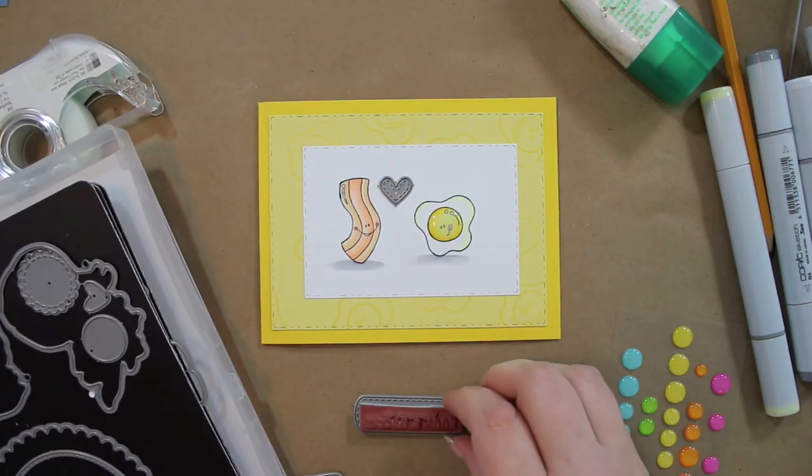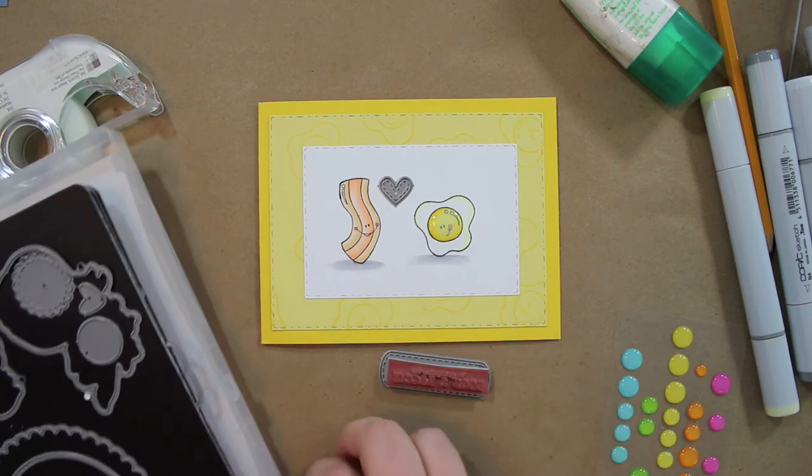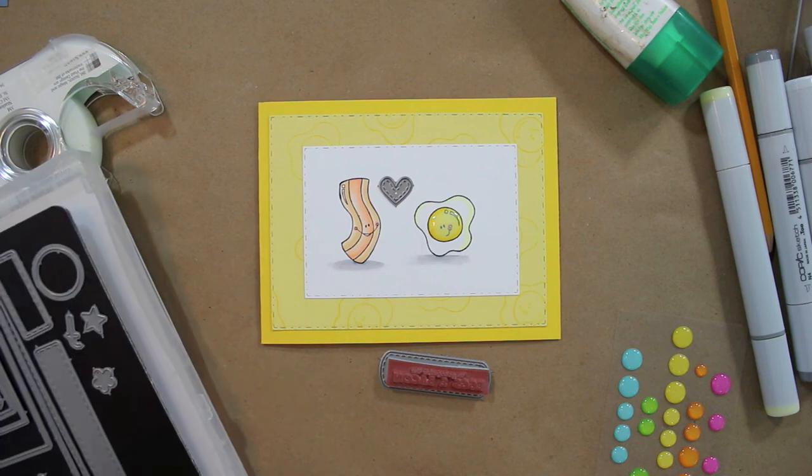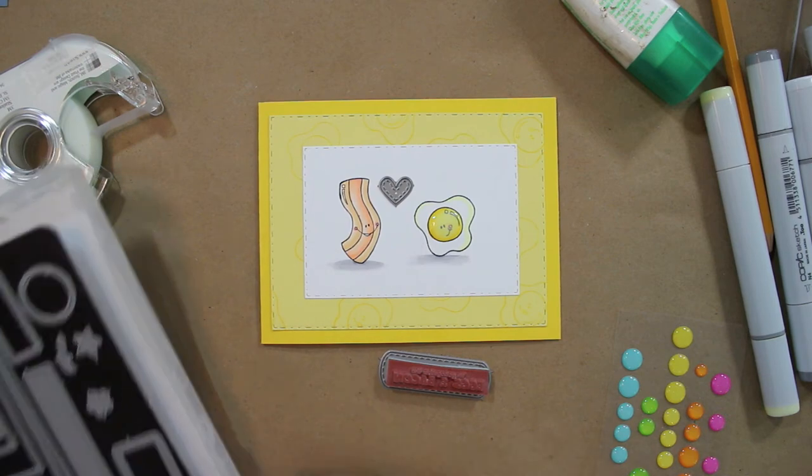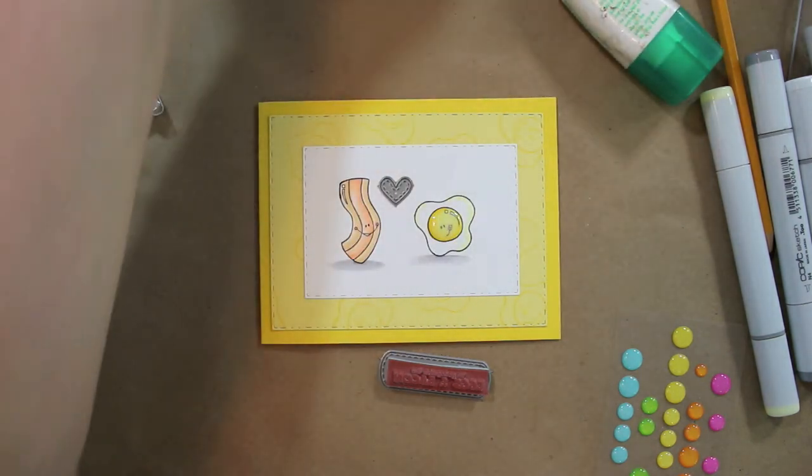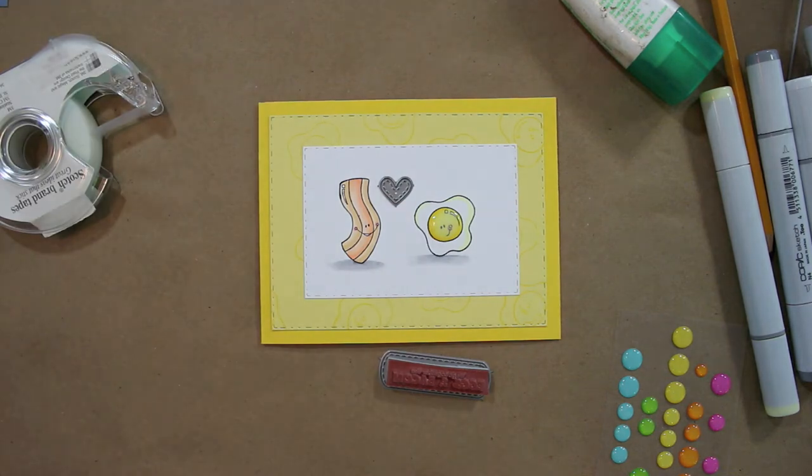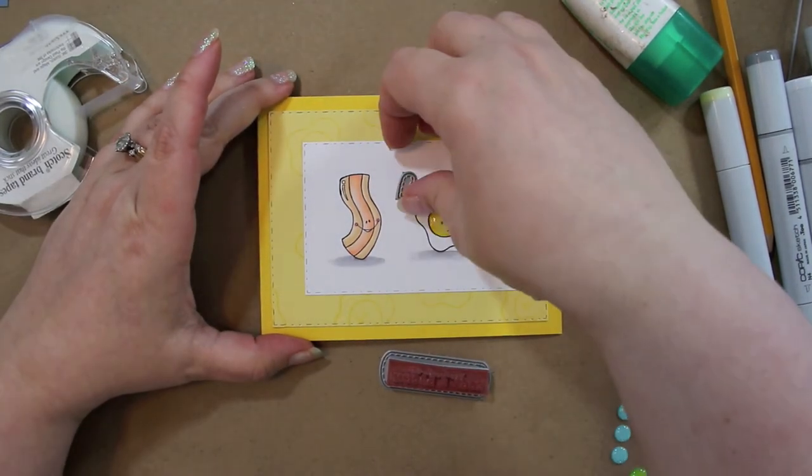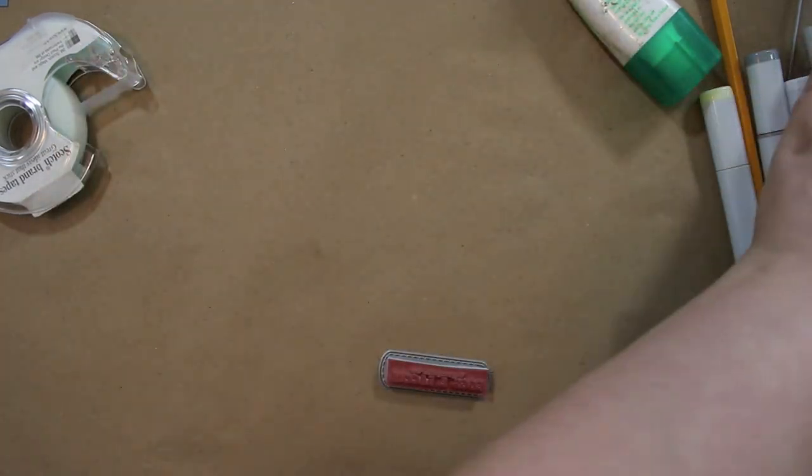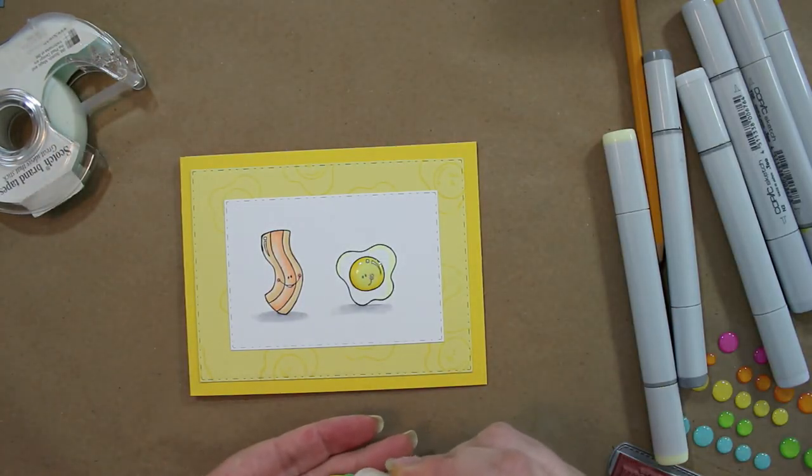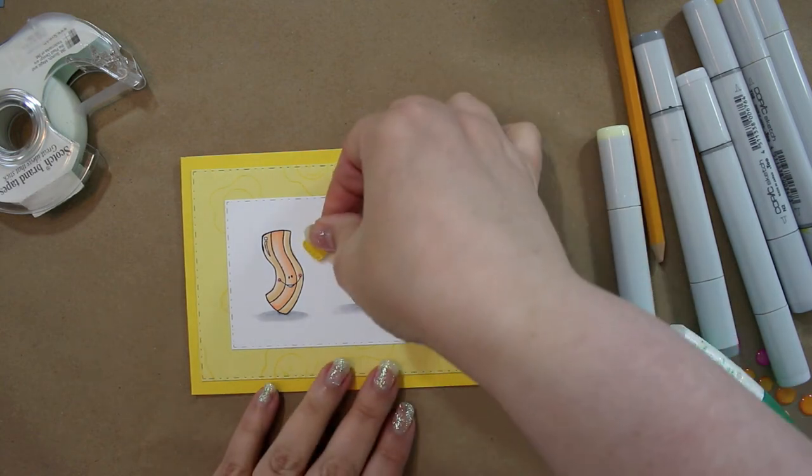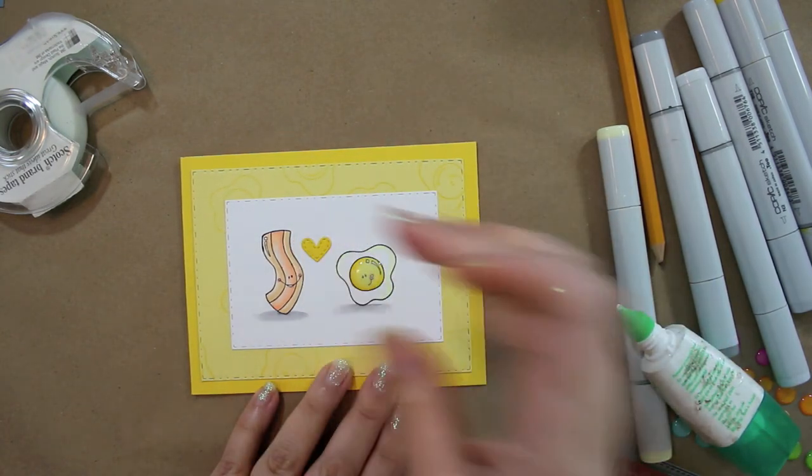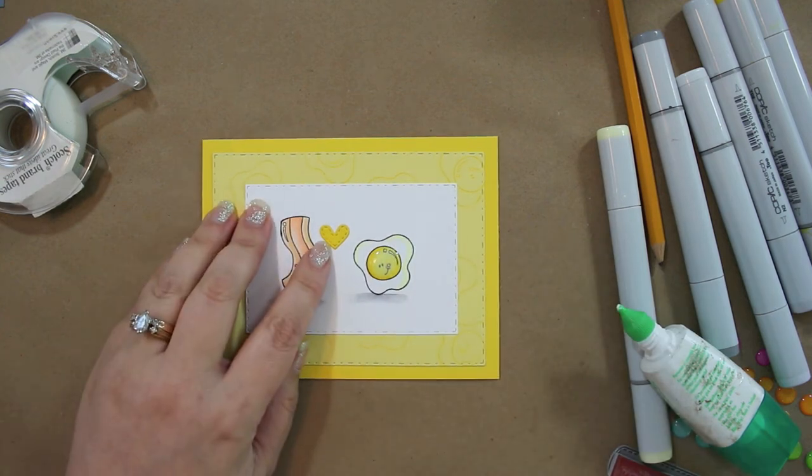I picked out the sentiment from the set and wanted to use one of my dies to cut out a little shape for the sentiment to go into. I found one from our Make a Card Number Two set and used the heart from the Make a Card Number One. I use this little heart shape a lot on different cards. Now they love each other, their little hearts together.